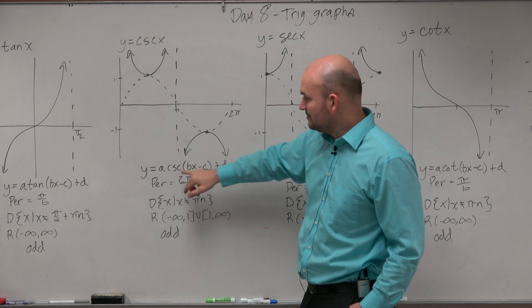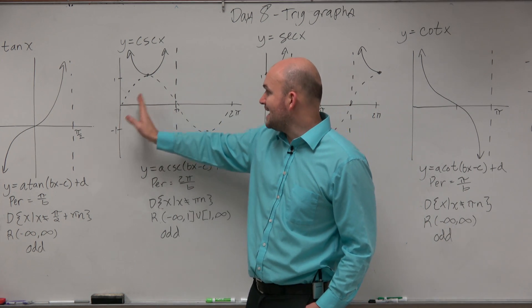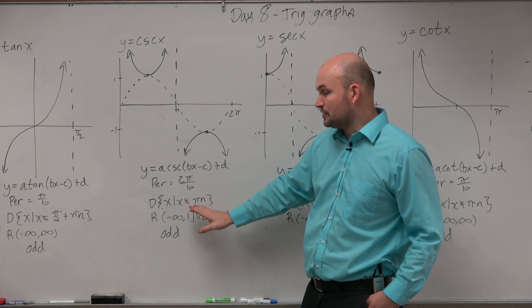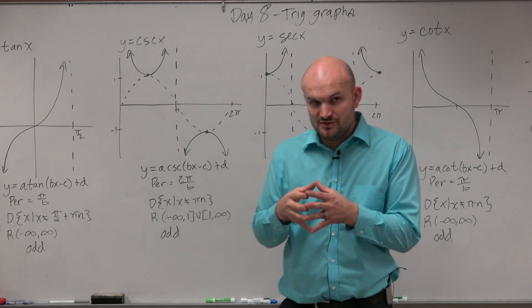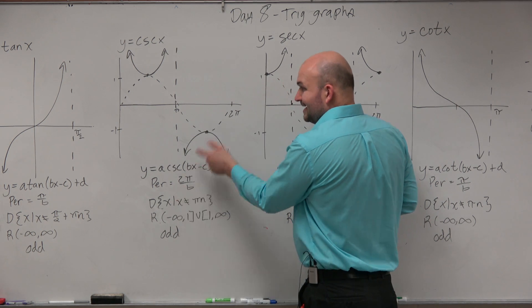Again, the a, b, c, and d are the same. The period, it takes 2 pi for it to repeat itself. The domain is all real numbers except where the asymptotes occur. And then the range, we're going to have to use that union again, because the graph is unbounded, goes down to negative infinity. It does have a max, but it's not an absolute max anymore.